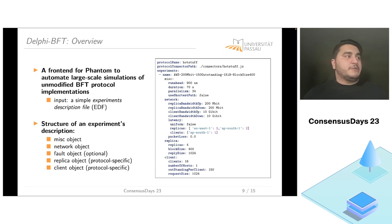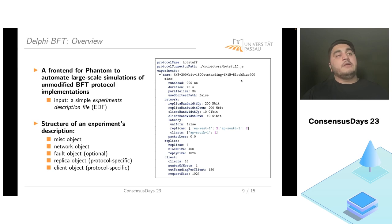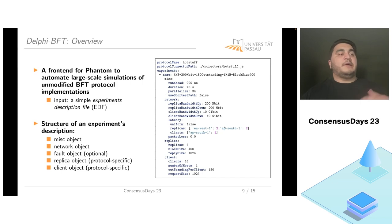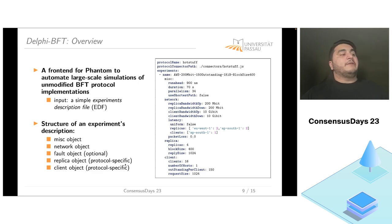Delphi BFT merely requires a simple experiment description file (EDF) as input. An EDF contains an experiments array where each entry describes an experiment to conduct. For each experiment there are several objects: in the network object you specify bandwidths and can assign replicas to certain AWS regions. The replica and client objects are protocol-specific, but common settings include the number of replicas, block size, payload, and so on.